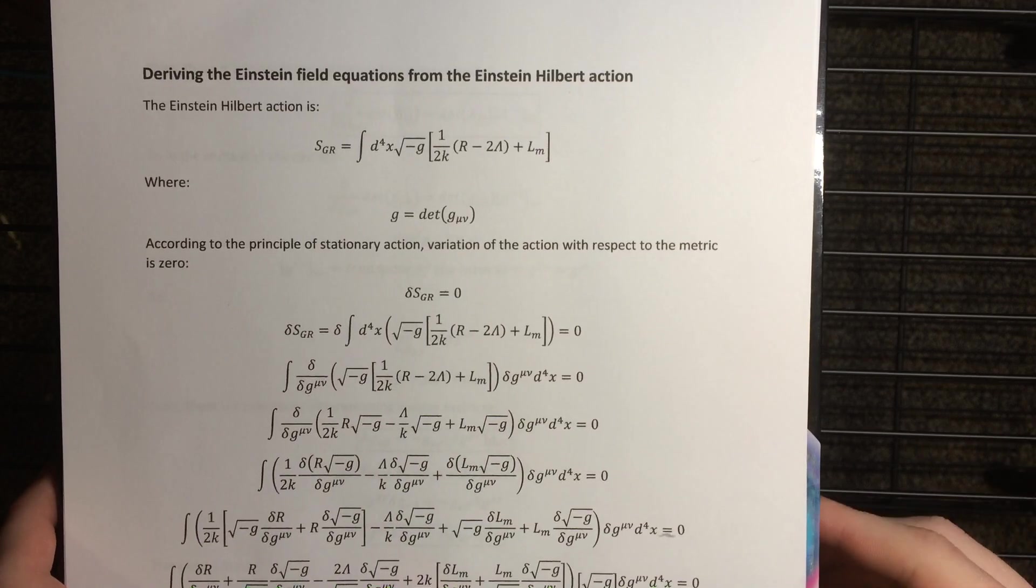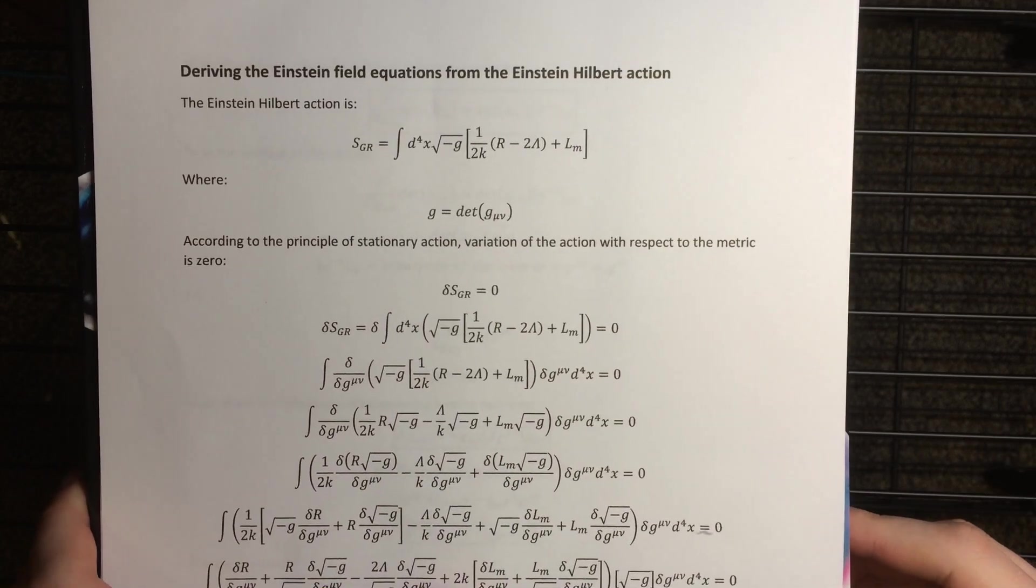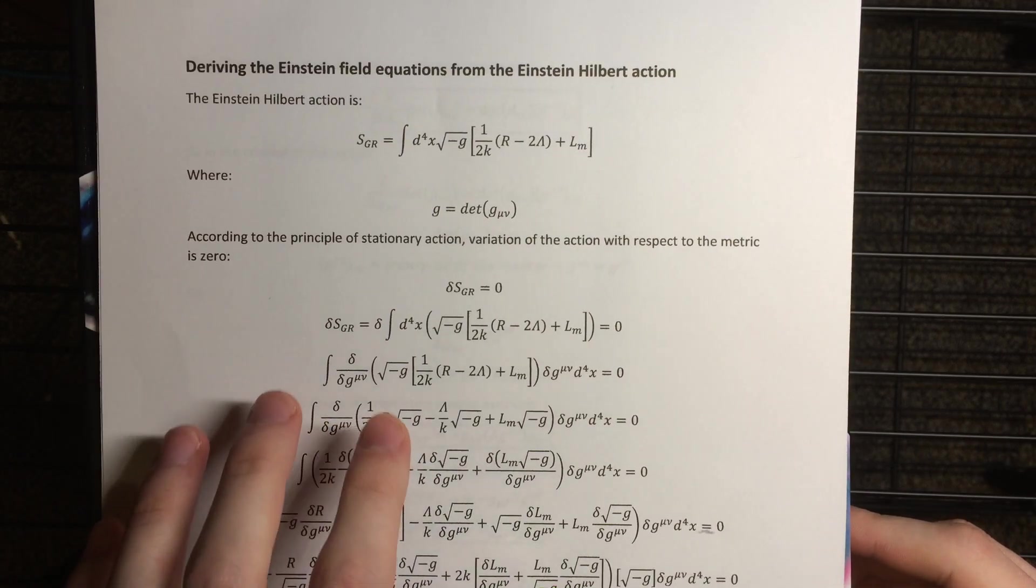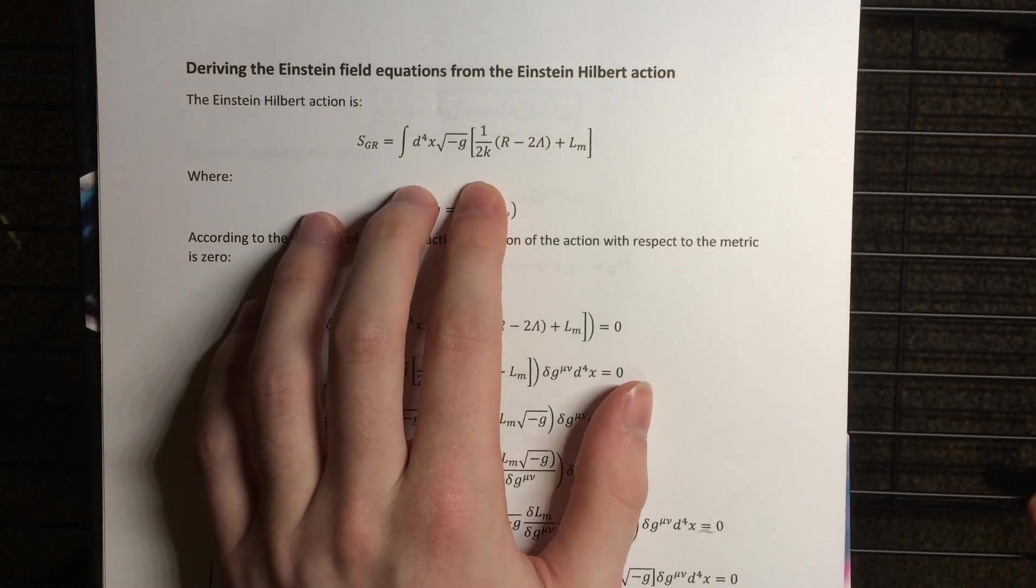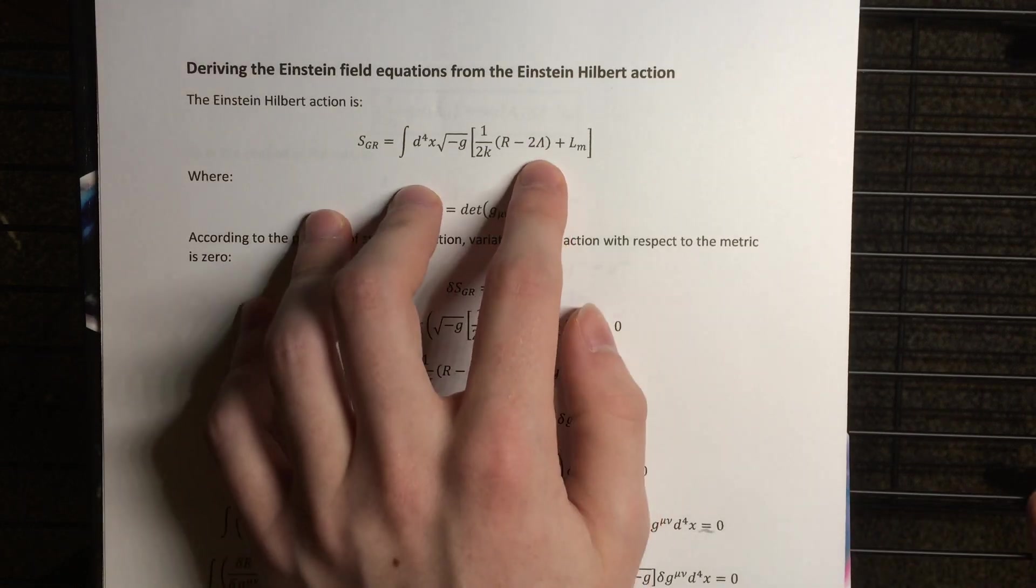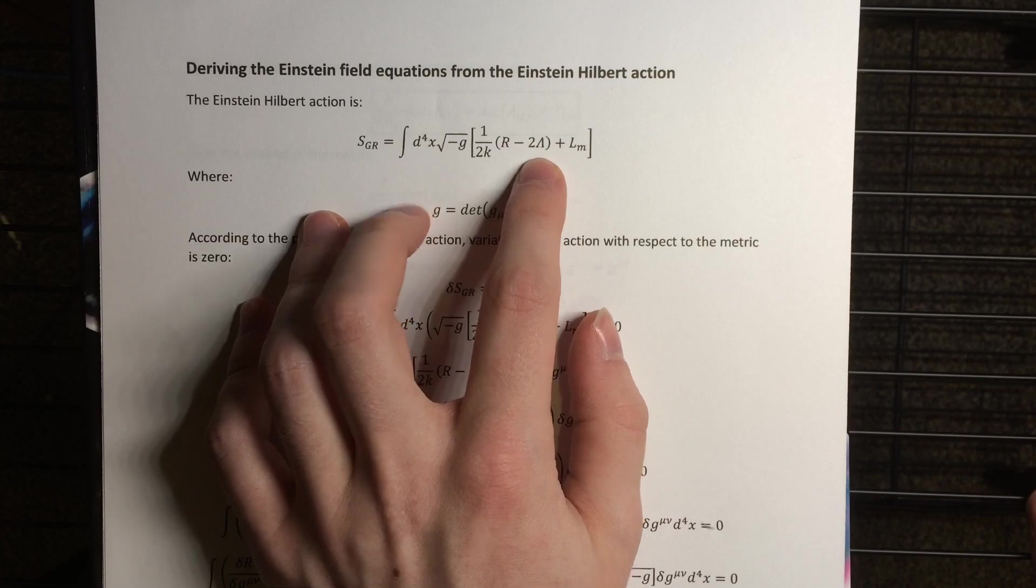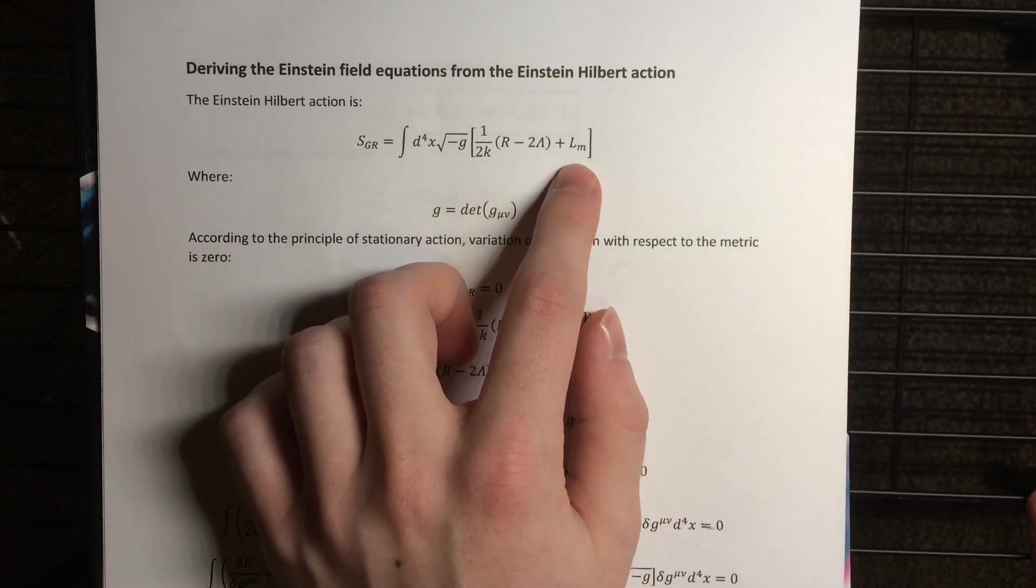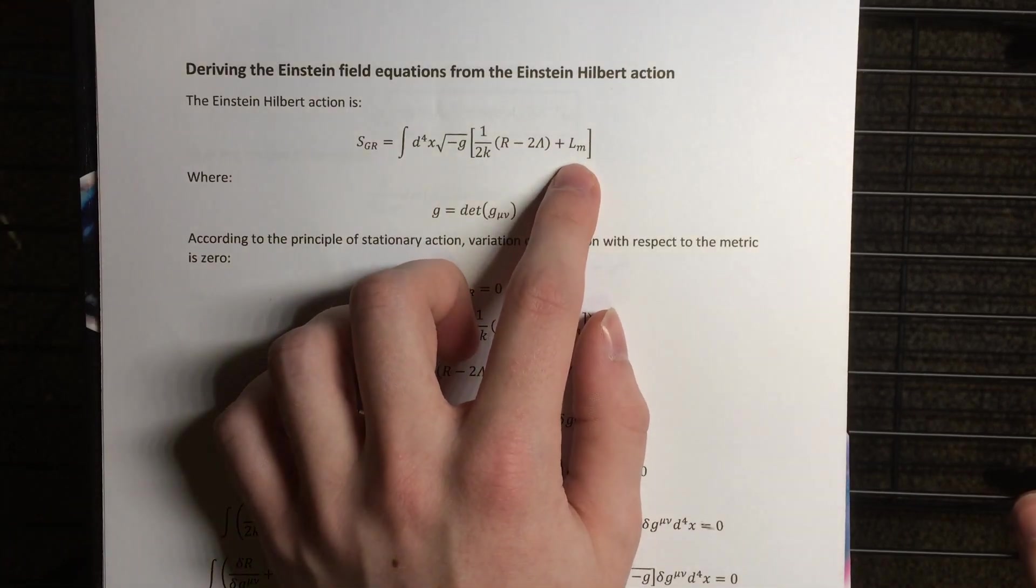In this video, I'm going to show you how to derive the Einstein field equations from the Einstein-Hilbert action. So this is the full Einstein-Hilbert action, with the term for the cosmological constant and the term for the source Lagrangian.